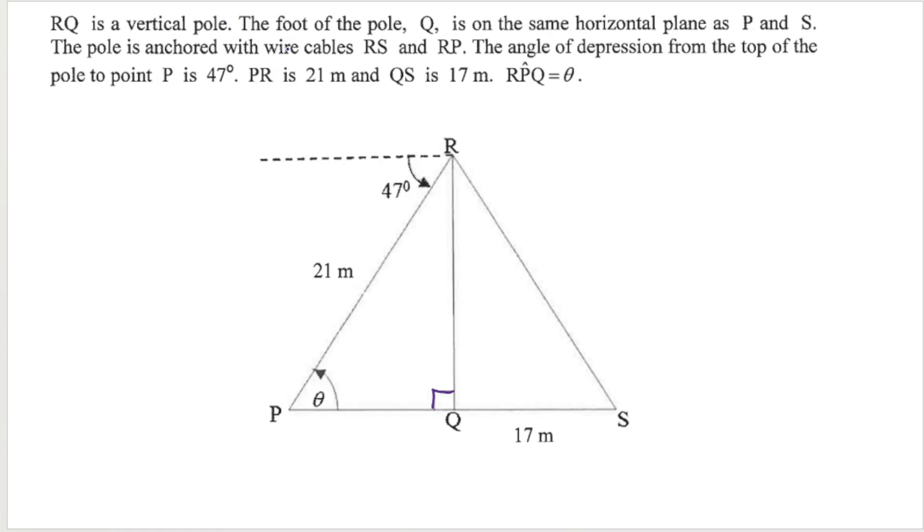The pole is anchored with wire cables RS and RP. The angle of depression from the top of the pole to point P - remember R is the top of the pole - so that angle indicated here is 47 degrees, the angle of depression.